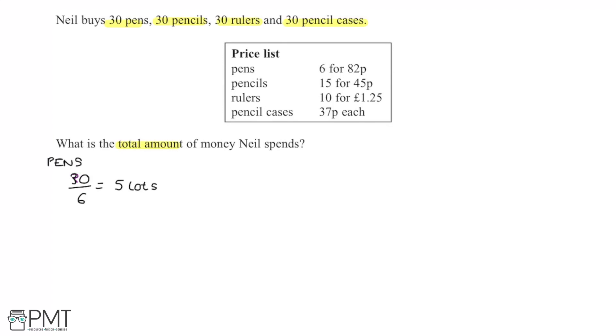So I'm going to need to buy 5 lots of these pens in order to have enough pens. Now 6 pens cost 82 pence, but it wants our answer in the form of pounds, so it's probably a good idea to just convert this here. So 82 pence is going to be 0.82 pounds.